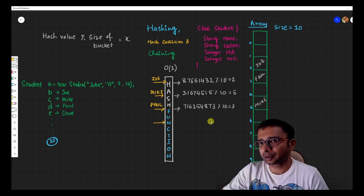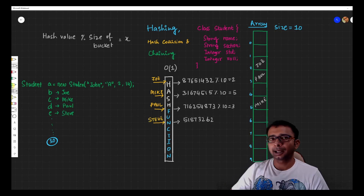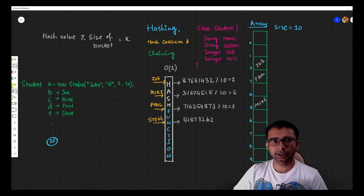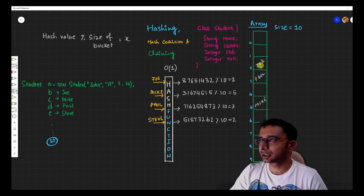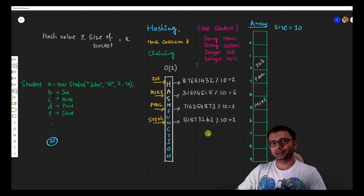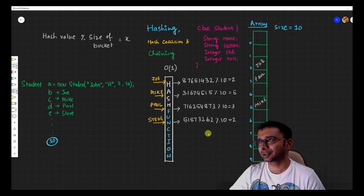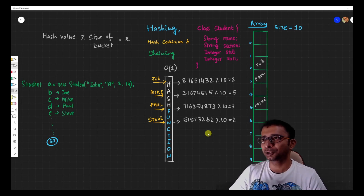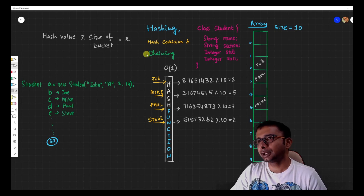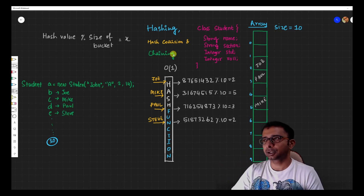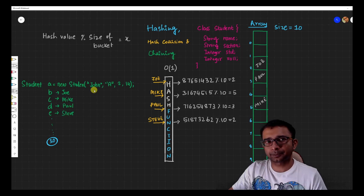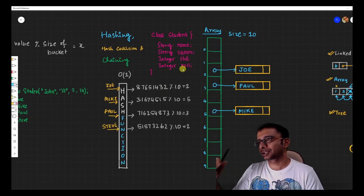Now let's understand the collision. Suppose I get input for 'Steve' and its hash value is some large number, but when I do mod 10 I get 2. When I go to index 2, someone is already sitting there — Joe. What should I do? Should I throw out Joe and put Steve there? Then when the user tries to find Joe, I'd have to say he's not there — that's unfair. So we have to handle this collision, and the way we do that is known as chaining.